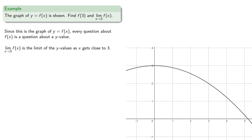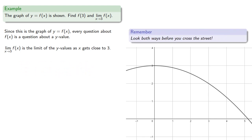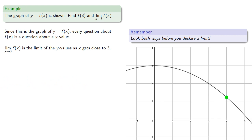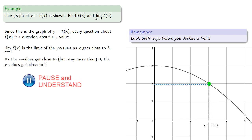So the limit as x approaches 3 of f of x is the limit of the y values as x gets close to 3. Now an important idea here is: look both ways before you cross the street — or rather, look both ways before you declare a limit. In this case, we can approach x equals 3 either from above or from below, and it's important to check what happens in both cases. So as the x values get close to but stay more than 3, the y values get close to 2. And so the limit as x approaches 3 from above of f of x is equal to 2.